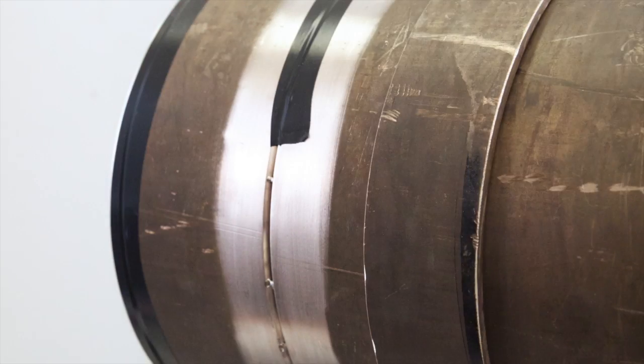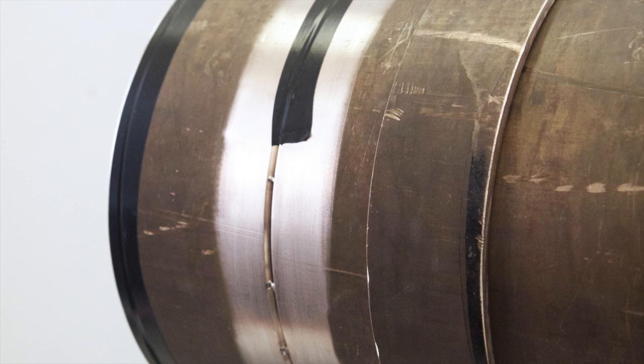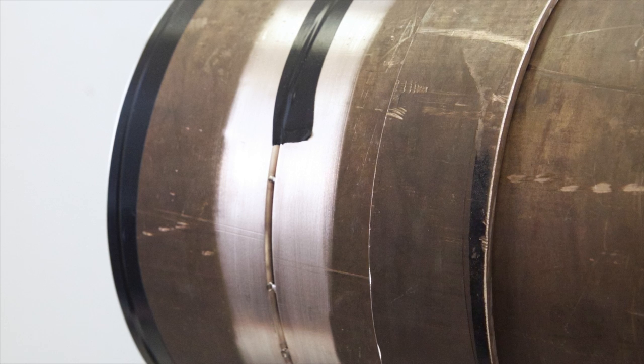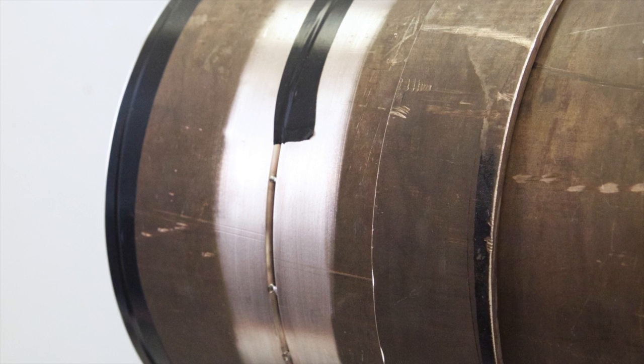We've tack welded this pipe section together. Notice that our tack welds are closer together than you'd normally use for carbon or stainless steels. This is typical of copper nickel welding. Also, our tacks are quite small so that they're easily incorporated into the final weld. Be sure to inspect all the tack welds to make sure they're sound and to wire brush and remove any oxides before starting to weld.